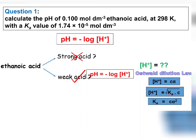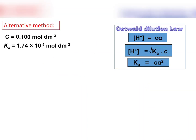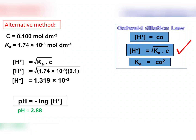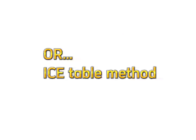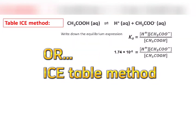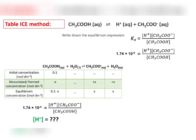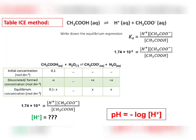Then only we can determine the pH value of the ethanoic acid. For the first method, we use the equations from Ostwald's dilution law directly, substituting the values of C and Ka into the formula, then use the pH expression to determine the pH value. The pH value is 2.88. We may also use the ICE table method to determine the concentration of hydrogen ions, which is 1.319 × 10⁻³.